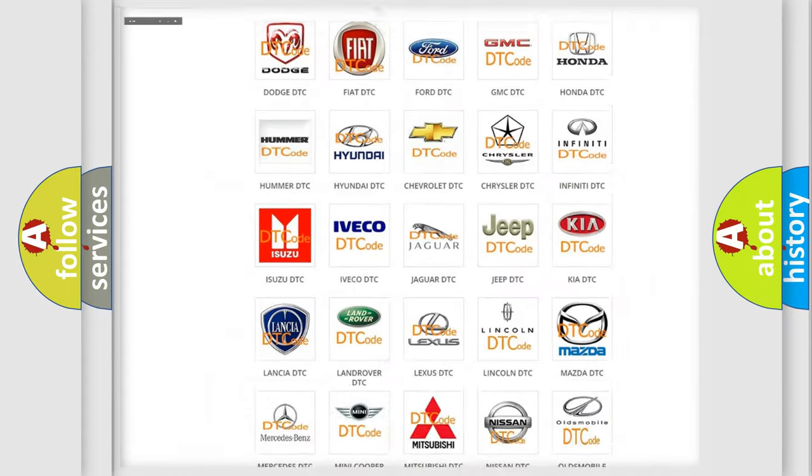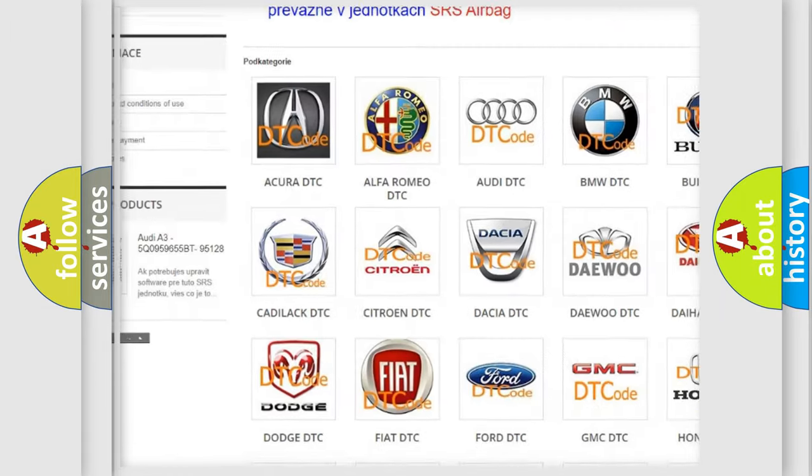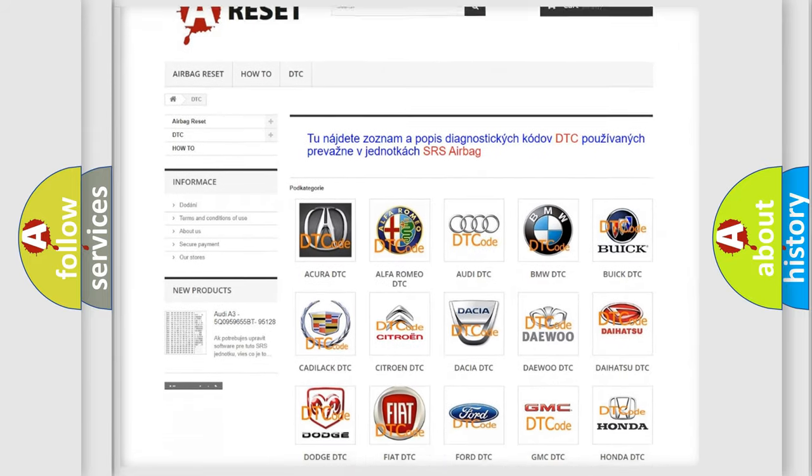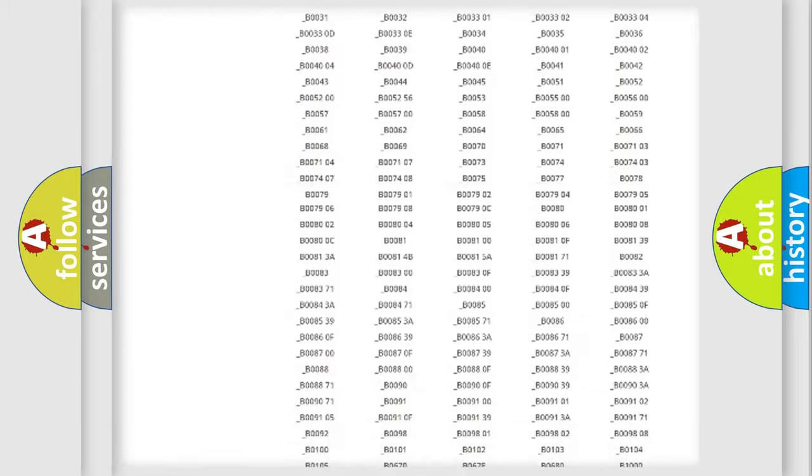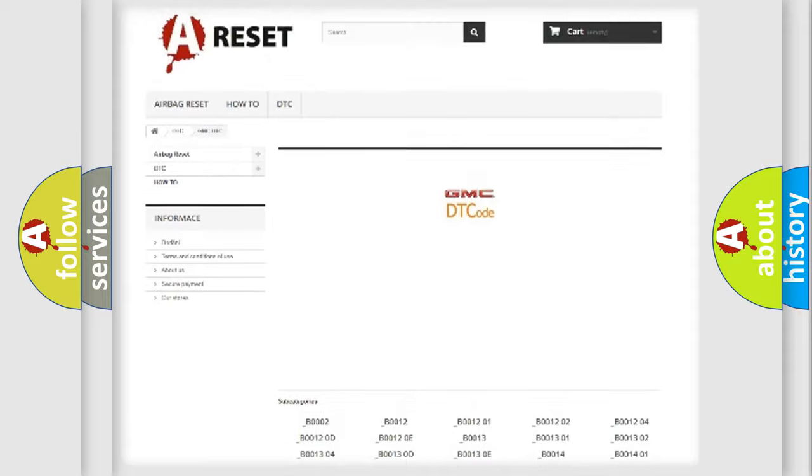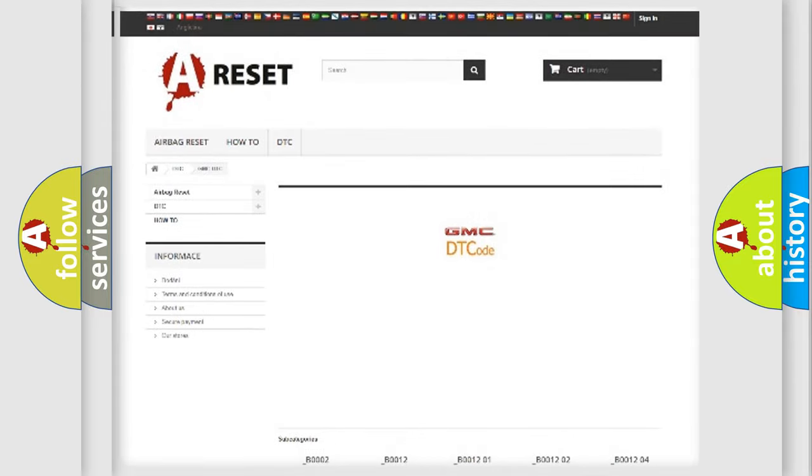Our website airbagreset.sk produces useful videos for you. You do not have to go through the OBD2 protocol anymore to know how to troubleshoot any car breakdown. You will find all the diagnostic codes that can be diagnosed in GMC vehicles, and many other useful things.